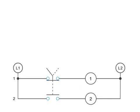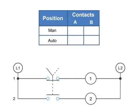Contact position on a selector switch can easily be illustrated using truth tables. This truth table illustrates the manual or automatic contact positions of a two-contact selector switch. Each contact on the line diagram is marked A or B. The positions of the selector switch are marked MAN for manual or AUTO for automatic. The truth table can be used to easily interpret what contacts are closed for a particular position.